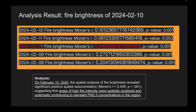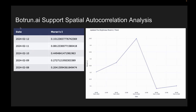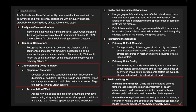It means on that day, when the fire brightness had a higher value, it caused the PM2.5 to rise in Bangkok. You can see the statistical analysis code, and you can further ask the bot to explain what the statistical analysis result means.